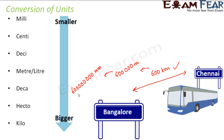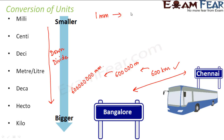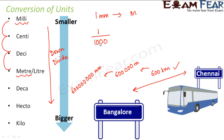In order to convert from one unit to another, we follow a very simple logic: when you move down, you divide. D for down, D for divide. As you move down from one unit to another, you divide by 10 at each step. For example, to convert one millimeter into meters, you move three steps down, so you divide by 1000. One millimeter is equal to one divided by one thousand meters.